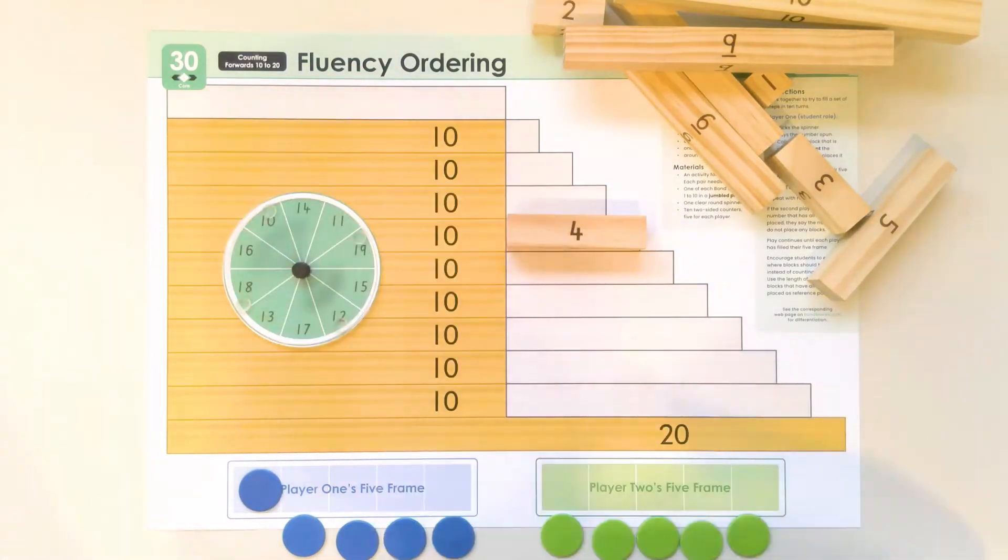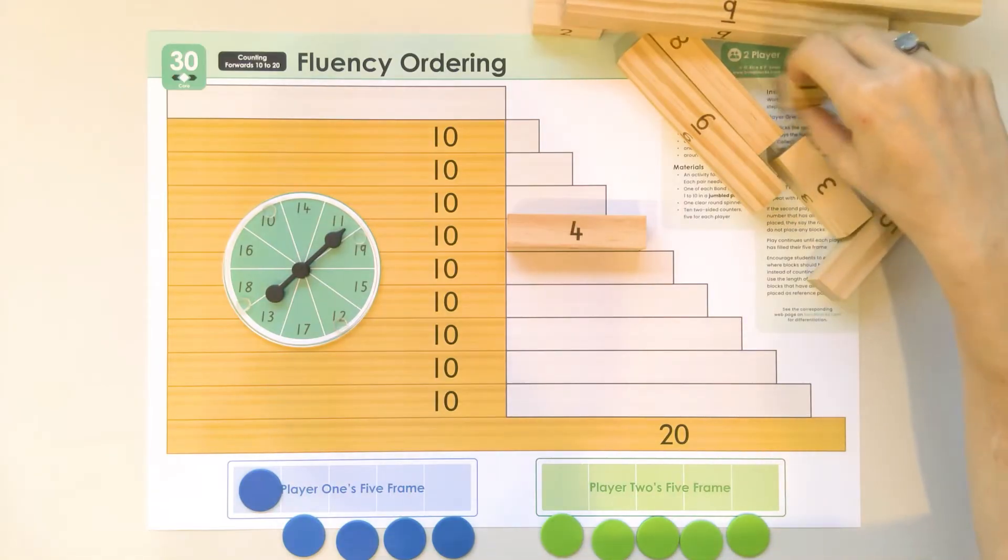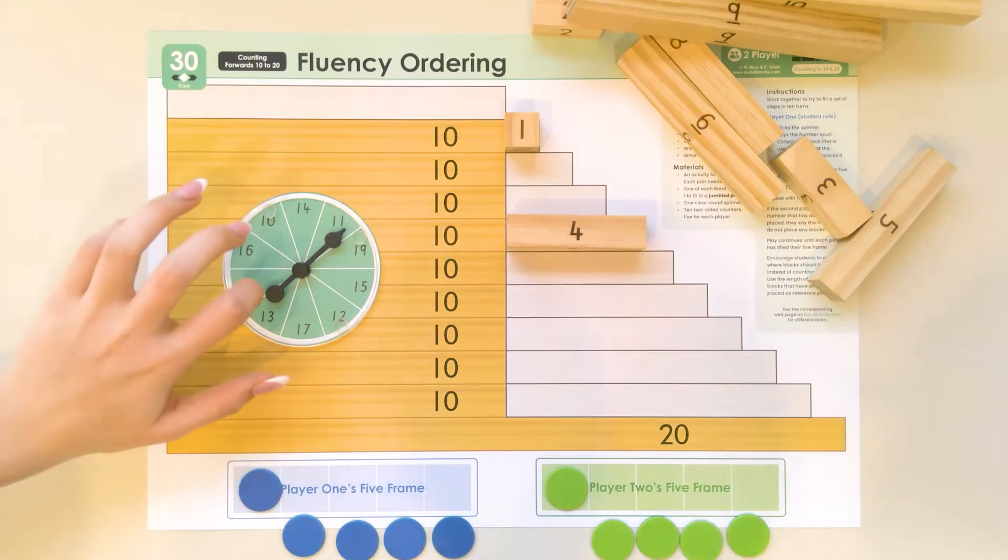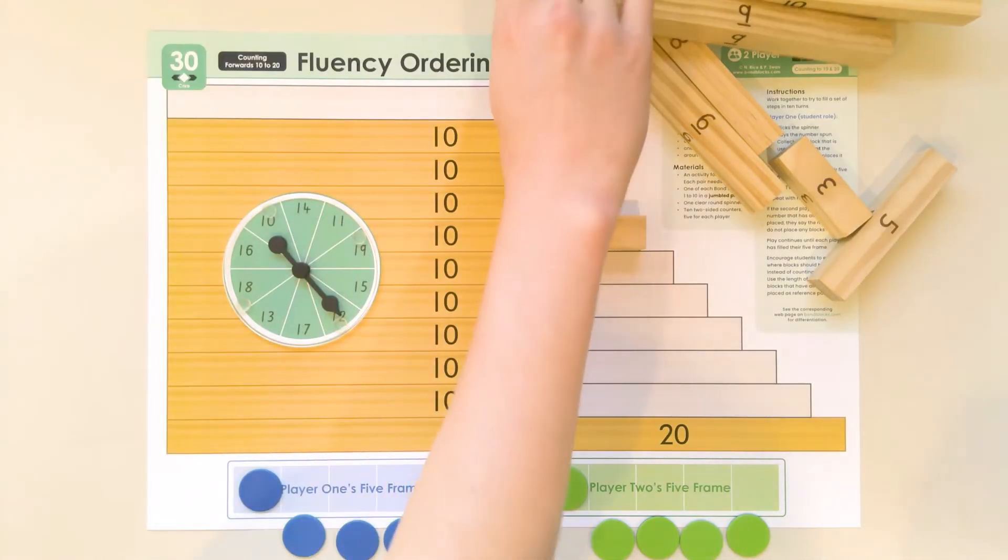And then my turn. Eleven. And I'll put one on. And I'll spin. Twelve. That's a nice one, straight after nine.